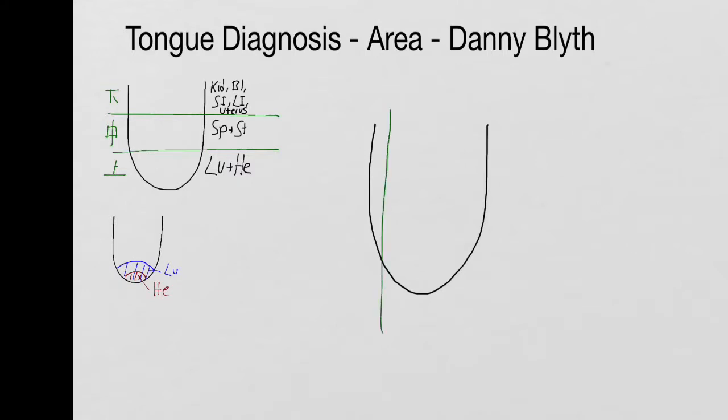Likewise, if we look at the sides, the whole sides correspond to the liver and gallbladder. And if it's just one-sided, the liver is more the left and the gallbladder more the right, whereas the middle section of the sides corresponds to the spleen and stomach.